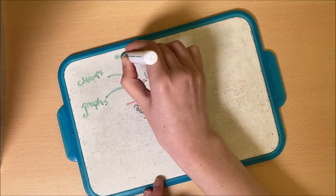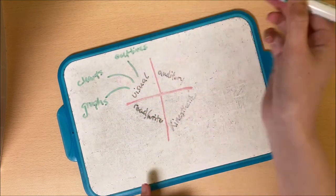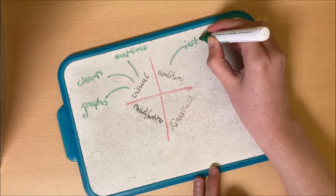Visual learners study best when they can see what they are learning. This means charts, graphs, and outlines all work the best.